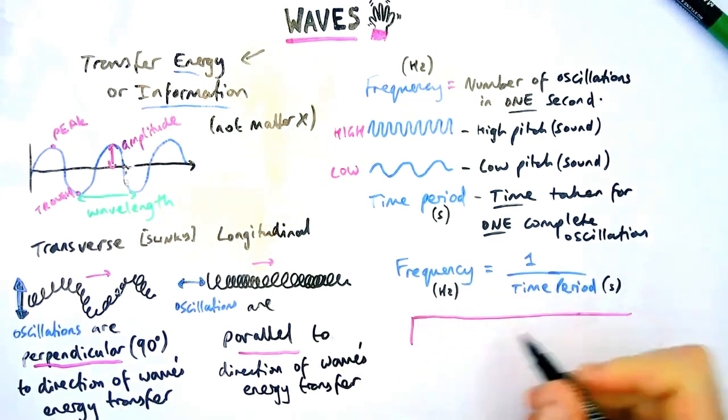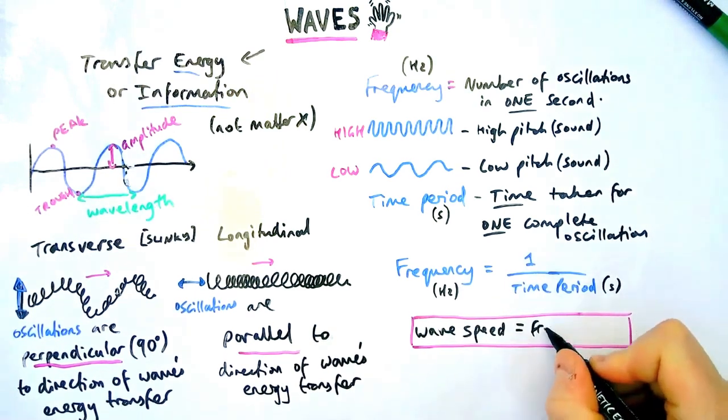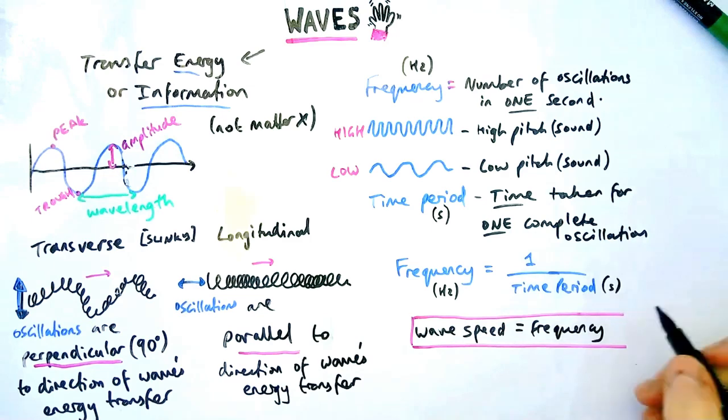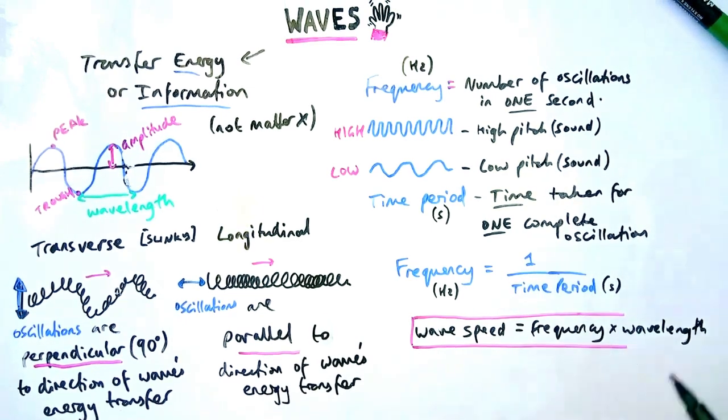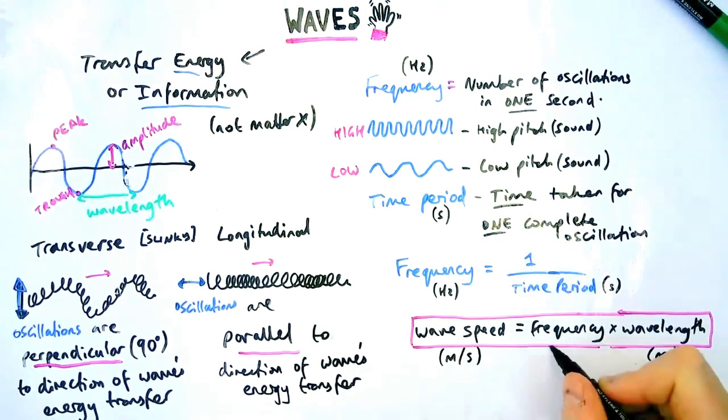And if I wanted to calculate the speed of the wave, I would need two things. I would need to know the wave's frequency and also its wavelength. What I would then do to those two things is multiply them together to find the wave's speed. There is a required practical on this, which I'm going to cover in a future video. Wave speed, just the same as regular speed, is measured in meters per second.